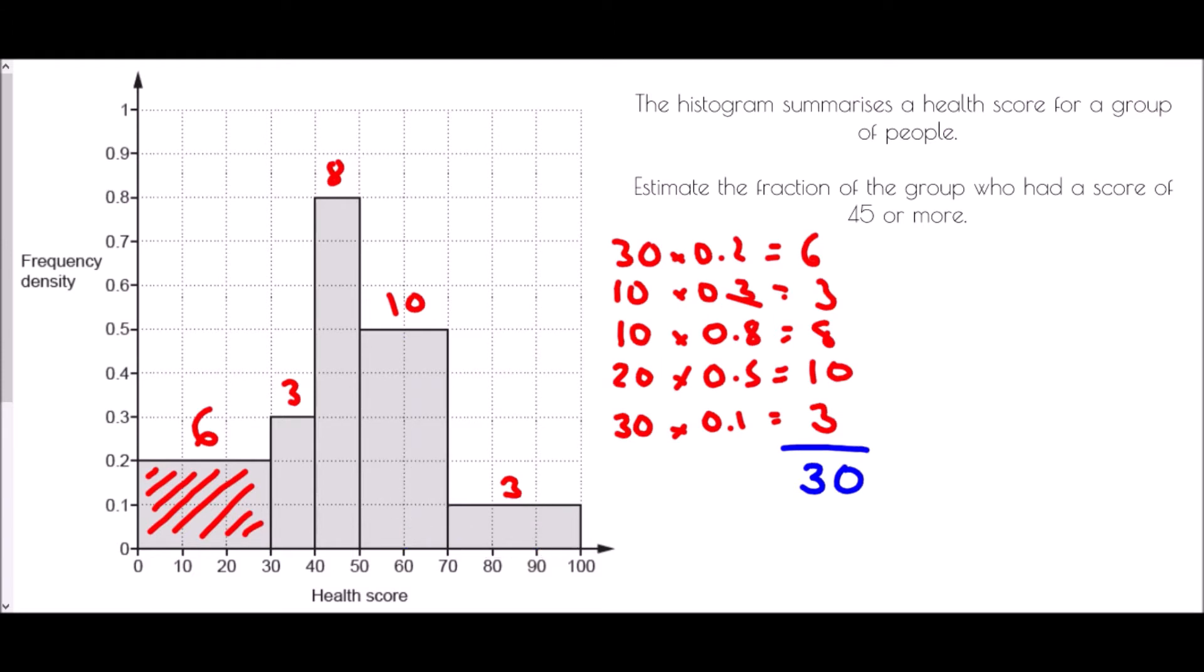So where do we have people scoring 45 or more? Well we definitely have this section because they scored 50 to 70 and we definitely have this section as they got 70 to 80. So that is 13 people. But then 45 is actually halfway through this bar and because of the word estimate, we're assuming that between 40 and 50 people were equally distributed and evenly distributed.